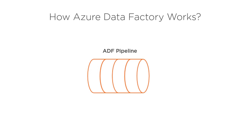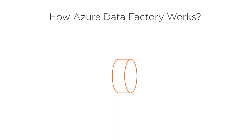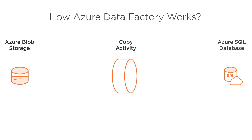A data factory pipeline is analogous to an SSIS package, where each pipeline is composed of activities that together perform a task. For example, to copy data from Azure Blob Storage to Azure SQL Database, you create a copy activity.